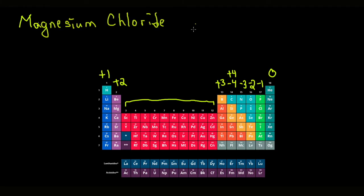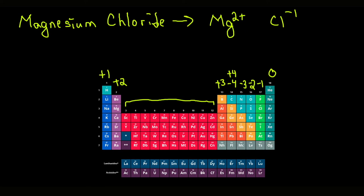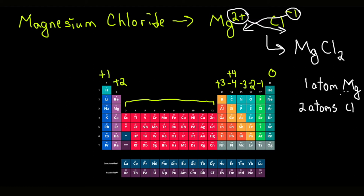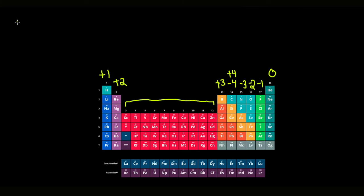For magnesium chloride: magnesium is two plus and chlorine is minus one. We crisscross — the negative one goes as the subscript for magnesium, and the two goes as the subscript for chlorine — giving us MgCl2, meaning one magnesium atom and two chlorine atoms. For lithium oxide: lithium is plus one and oxygen is two minus, so crisscrossing gives us Li2O.